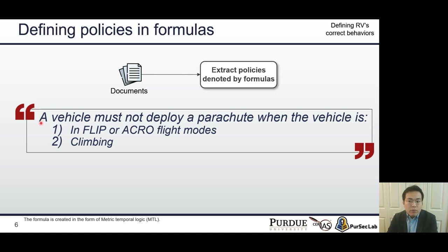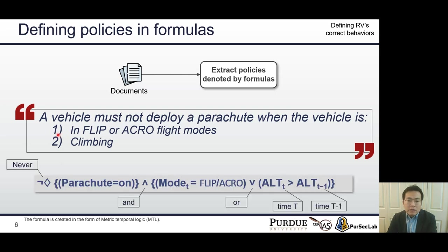Control software must disallow deploying a parachute under the following two conditions. We can convert the natural language to metric temporal logic MTL formula. For example, this symbol means never happen. First, while the parachute is released, if fly mode is flip or acro, it means that the RV violates this policy. Second, while the parachute is also released, if the altitude at time t is increased than altitude at time t minus 1, it also means that the RV violates the parachute policy.